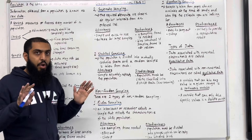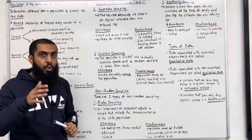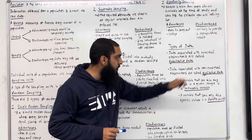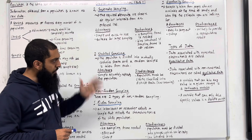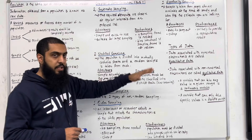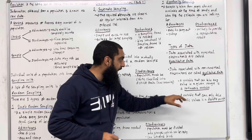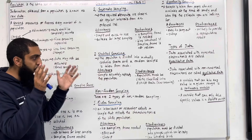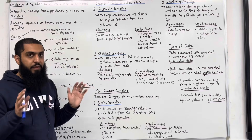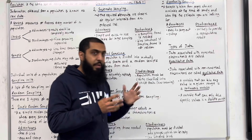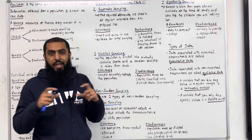The final thing to cover is types of data. Data associated with numerical observations are called quantitative data. Data associated with non-numerical observations are called qualitative data. For example, quantitative data could be data on height, and qualitative data could be data about hair colour. A variable that can take any value in a given range is called a continuous variable — for example, height. A variable that can only take specific values is called a discrete variable — for example, the number of students in a class, which will always be a fixed number.